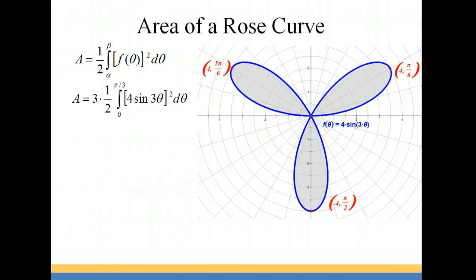So we're going to multiply our formula by 3. Remember, our formula for finding the area in polar form is 1 half the radius length squared d theta, the integral of the radius squared. So our radius is determined by our function, which in this case is 4 sine 3 theta, and then we're going to square that.